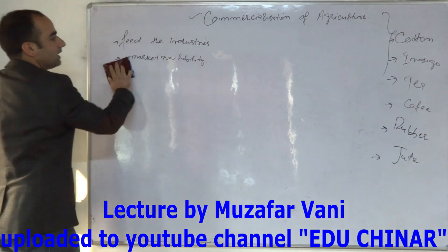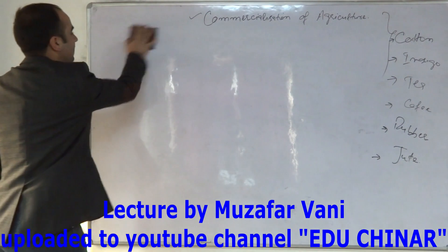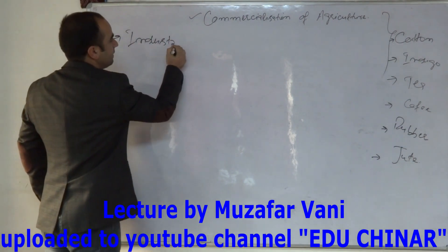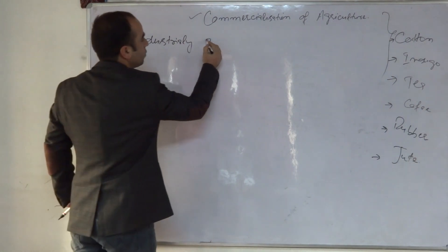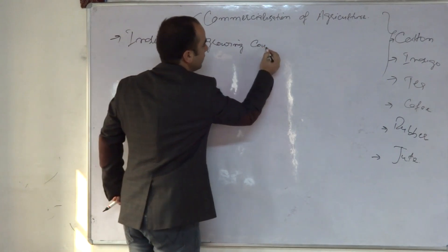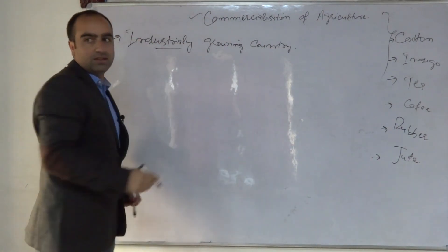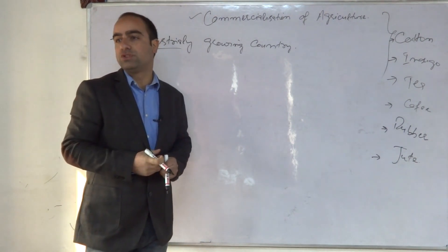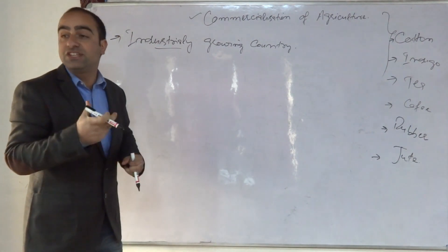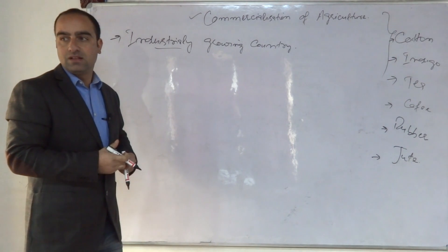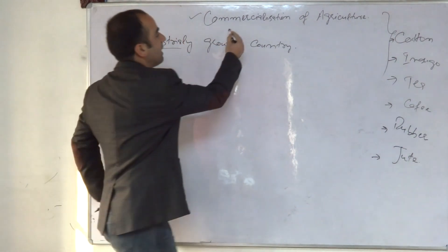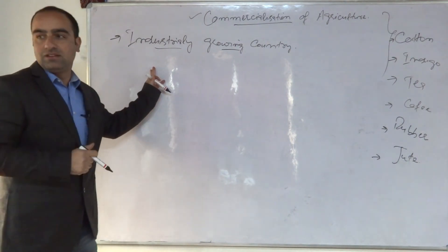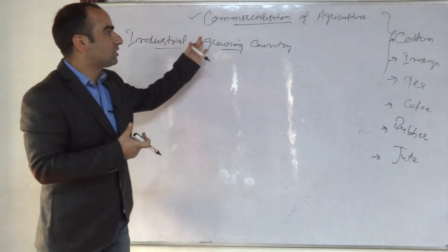This commercialization of agriculture is actually related with industrialization - it is the feature of an industrially growing country. During the first and second half of the 19th century, Britain was going through the phase of industrial revolution while India was going through the phase of industrial backwardness. Since commercialization of agriculture is the feature of an industrially growing country, it was not India but Britain which was growing industrially at that time.